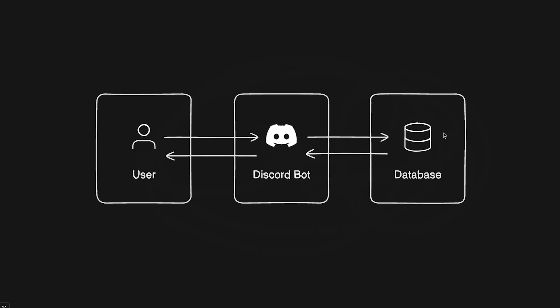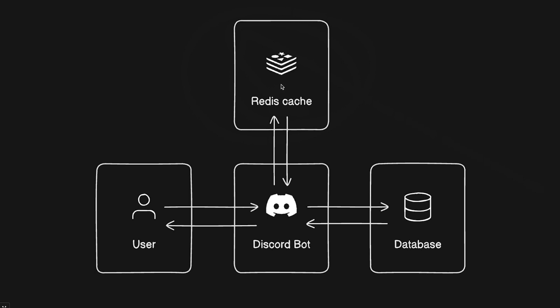Now let's take a look at a bot with a caching layer, using a Redis cache. The user sends a request to our Node.js server, which first checks the Redis cache to see if the data exists there. If it does, we just return that data to the user. If not, we go to the database, fetch the data, store it in the cache with a time limit of say 30 or 60 seconds, then send it back to the user. Next time the same or another user wants that data, we fetch it directly from the Redis cache instead of calling the database every single time.